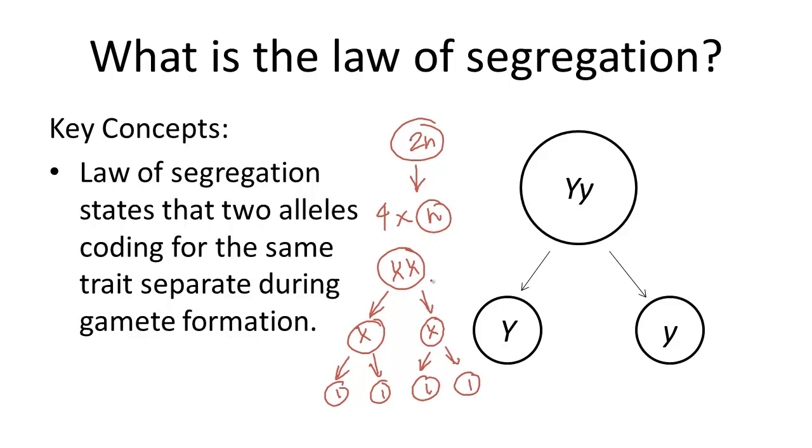And so what this tells us, because each allele coding for the same trait is found on only one of the homologous pairs, that means when the homologous pairs separate, the alleles will separate with them.